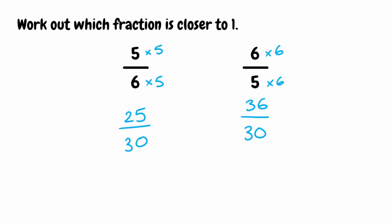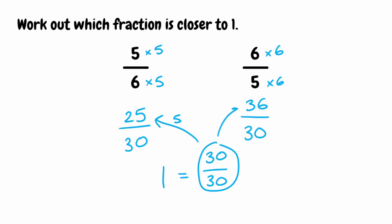Now we want to see which fraction is closest to 1. We're going to convert 1 into a fraction with the same denominator, keeping 30 on the bottom. For that to equal 1, the numerator must be 30, so we have 30 over 30. We can see that 25 over 30 is 5 thirtieths away from 1, and 36 over 30 is 6 thirtieths away. So 25 over 30 is nearest, meaning the answer in original form is 5 sixths.